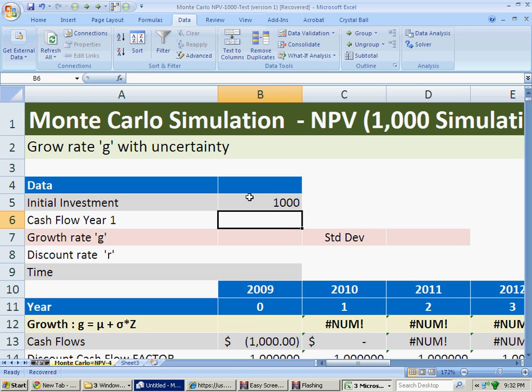Let's say the cash flow for the first year is $200. And let's consider a growth rate, a 5% growth but with a standard deviation of 1%.